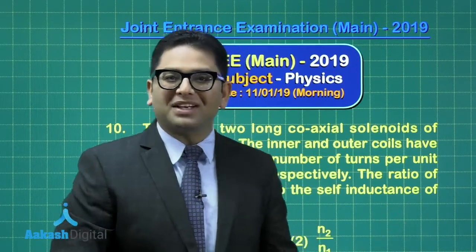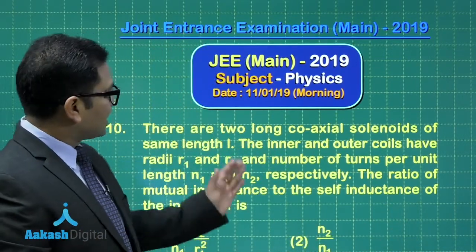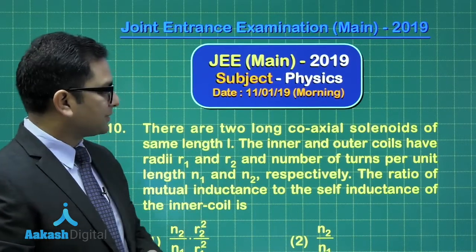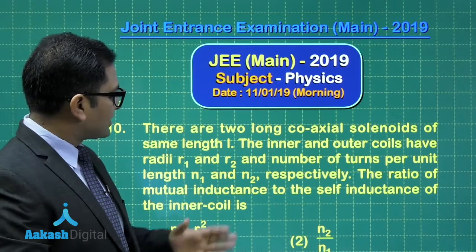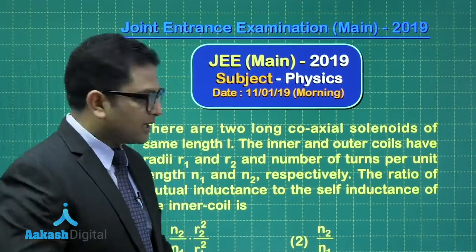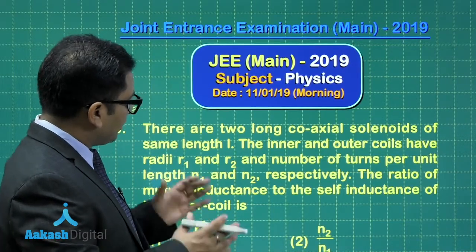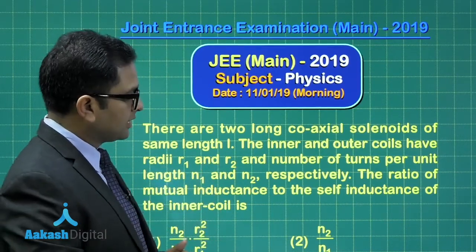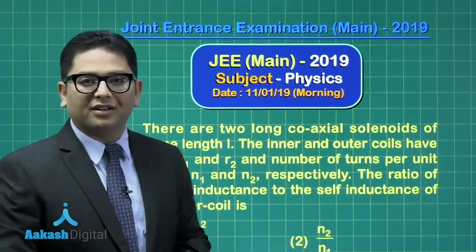So what is the question? It says that there are two long coaxial solenoids of the same length. The inner and outer coils have radii R1 and R2, and number of turns per unit length N1 and N2 respectively. We need to calculate the ratio of mutual inductance to self-inductance of the inner coil.